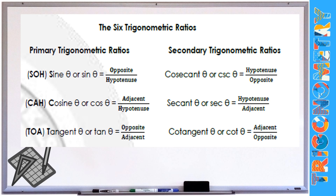The formula for sine is opposite side over hypotenuse. Cosine is the adjacent side over the hypotenuse. Tangent is opposite side over the adjacent. The secondary trigonometric ratios — cosecant, secant, and cotangent — are just reciprocals of our primary trigonometric ratios. Cosecant is hypotenuse over opposite, the reciprocal of sine. Secant is hypotenuse over adjacent, the reciprocal of cosine.